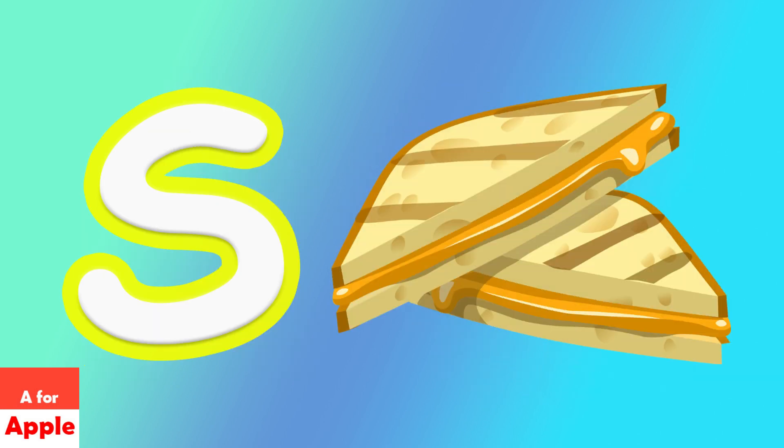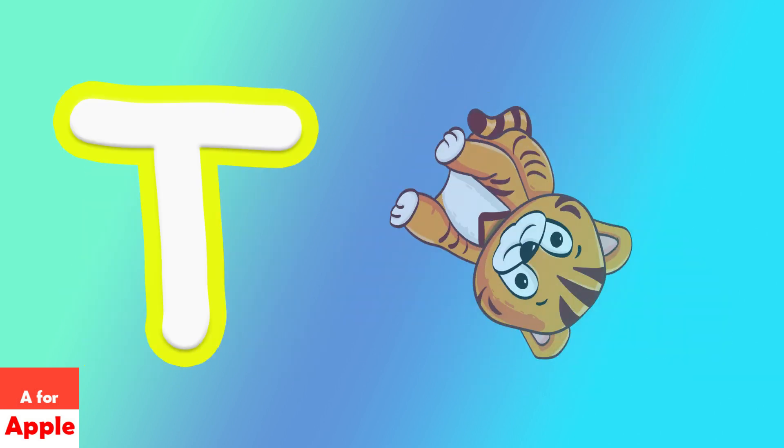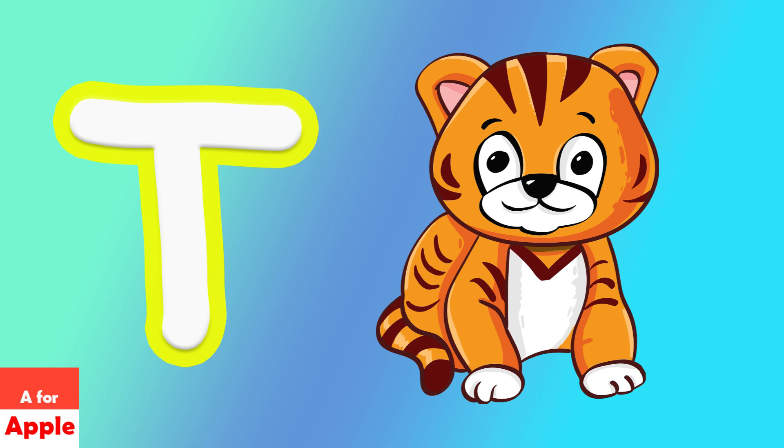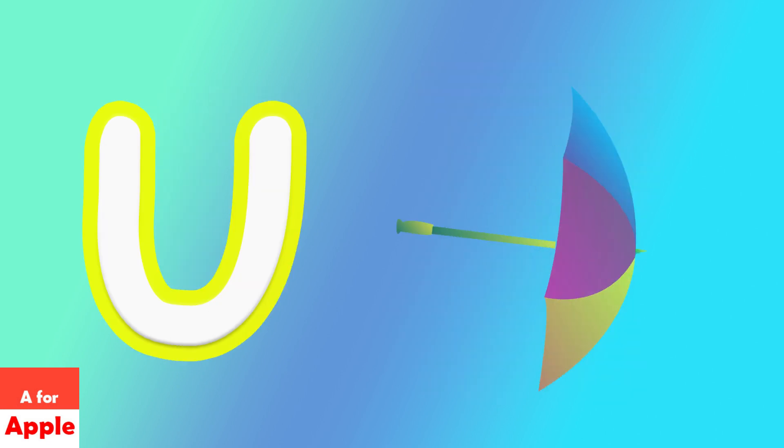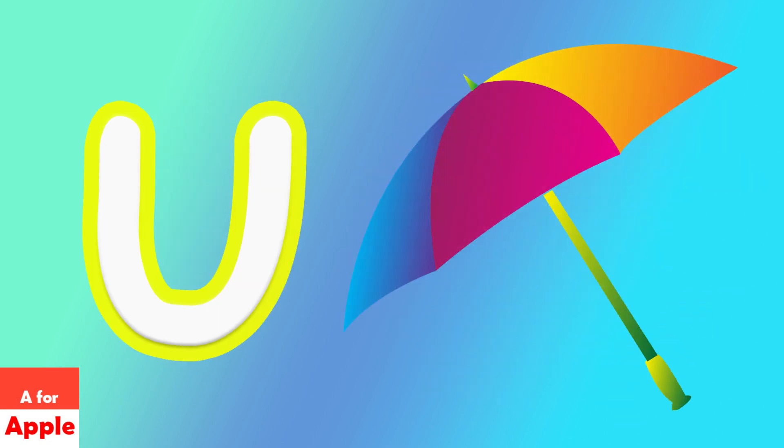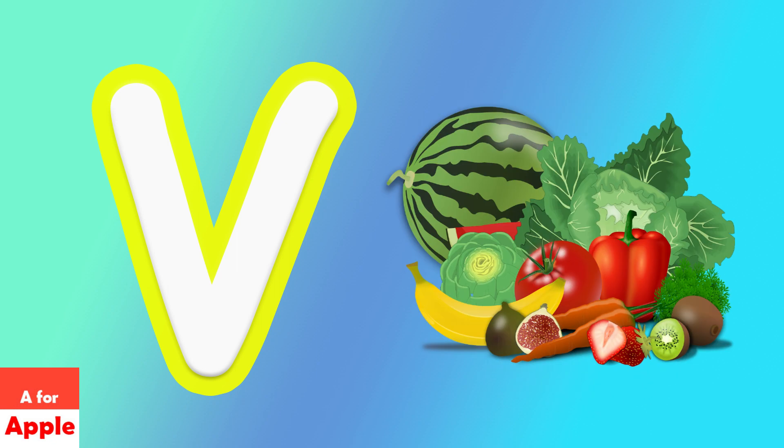T for Tiger, U for Umbrella, V for Vegetables.